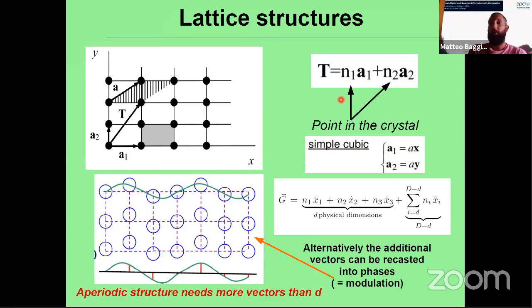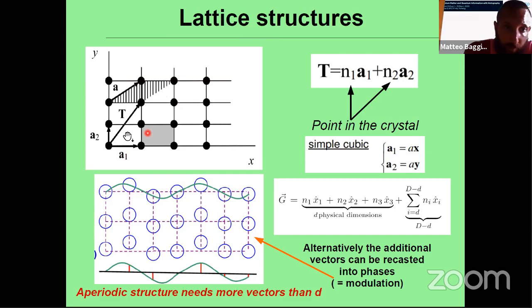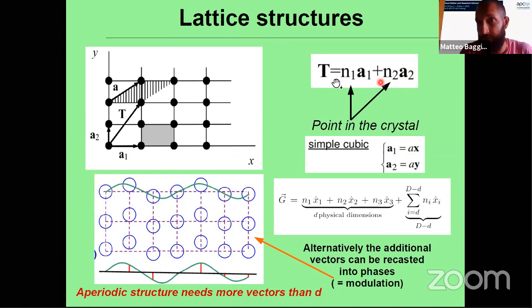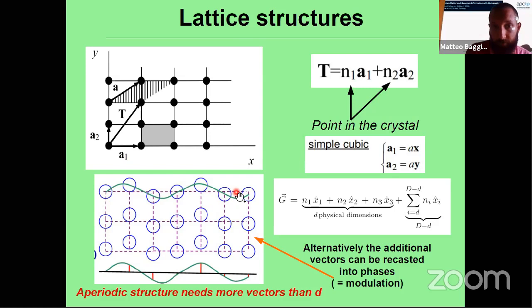Let's start with a two-dimensional cubic crystal for simplicity. To locate any point I need two vectors a₁ and a₂, which constitute a basis for the two-dimensional space — orthogonal and independent. Every point is given by two numbers, the coefficients in the linear combination of these two vectors. In three dimensions you need three numbers. But if you have a quasicrystal, for example a sinusoidally modulated lattice, this is no longer true — you need more than two vectors, or equivalently the same number of vectors plus an additional phase.